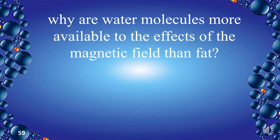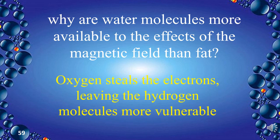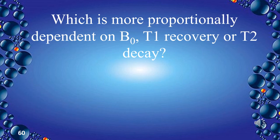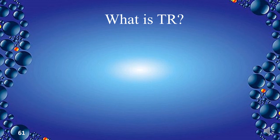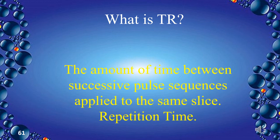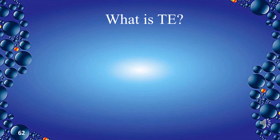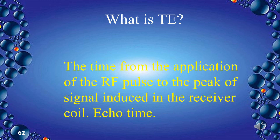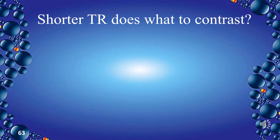Why are water molecules more available to the effects of the magnetic field than fat? Because oxygen steals electrons, leaving hydrogen molecules more vulnerable. Which is more proportionally dependent on B0 — T1 recovery or T2 decay? T1 recovery. TR is the amount of time between successive pulse sequences applied to the same slice — repetition time. TE is the time from the application of the RF pulse to the peak of the signal induced in the receiver coil — echo time. Shorter TR increases the contrast.